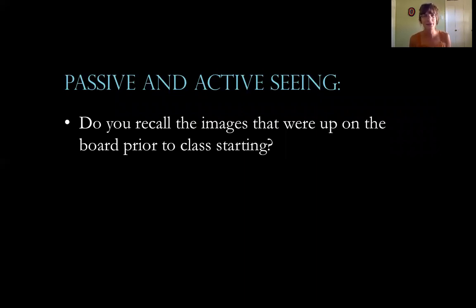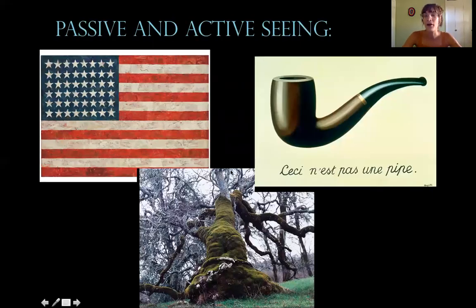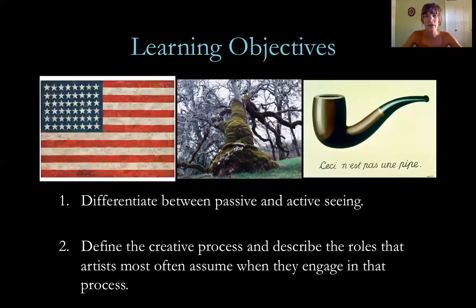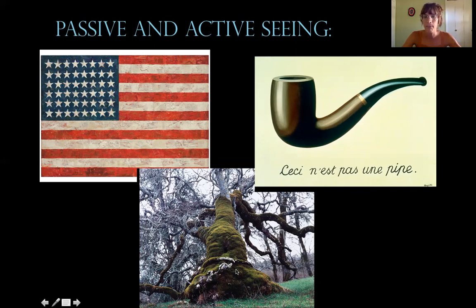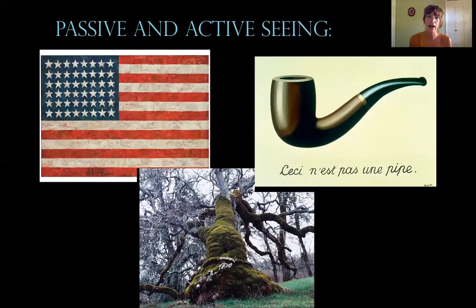If we were in person, students usually say something like, 'I think there was a pipe, a tree maybe, and a flag.' Those are vague responses. This is what you saw when I was speaking — I didn't reference them, I didn't talk about them, they were just there. Some of you might have looked specifically and closely at the pipe. Maybe some of you can speak French — this text is in French. This is a great way to start thinking about active and passive seeing.